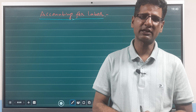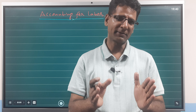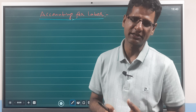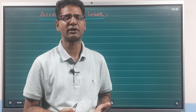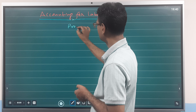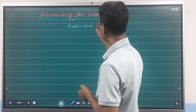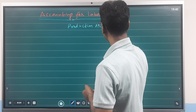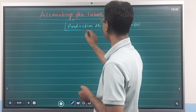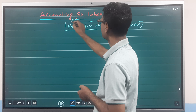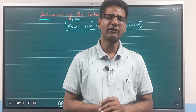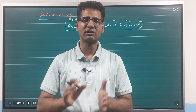In the manufacturing industry or service-oriented organizations, there are many resources involved in recruitment and selection. Accounting for labor is a kind of record-keeping system of different types of workers.